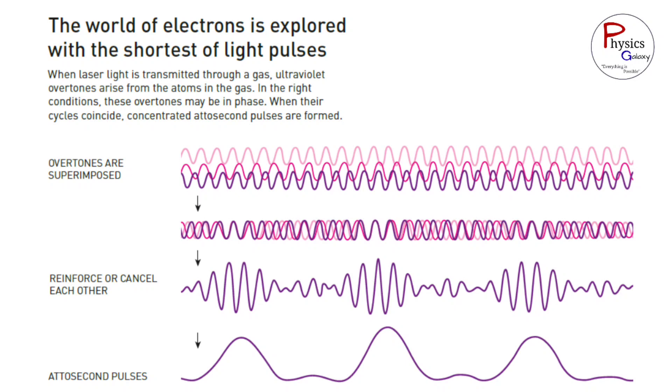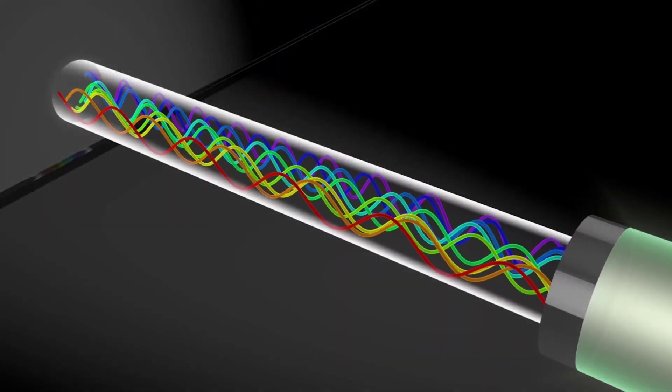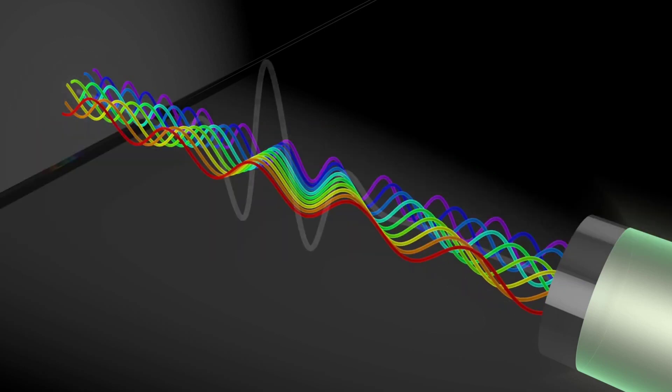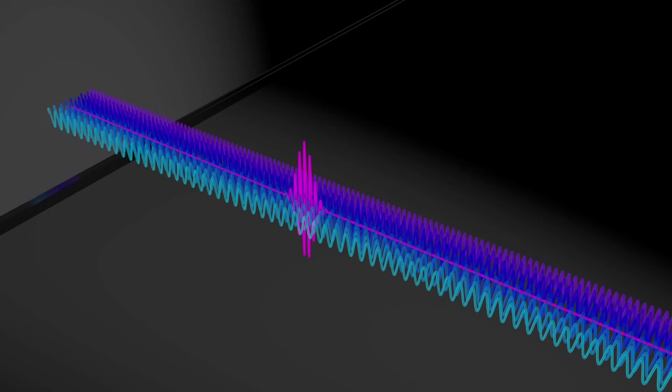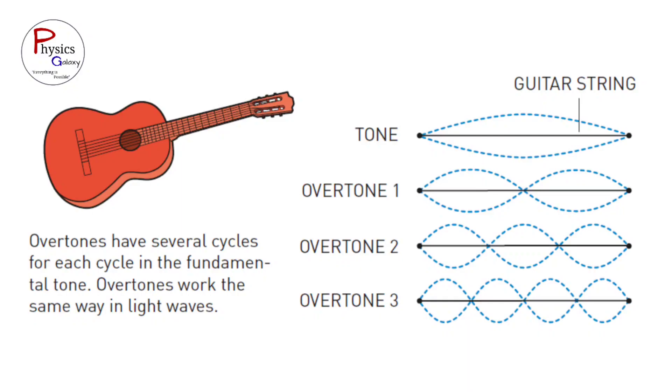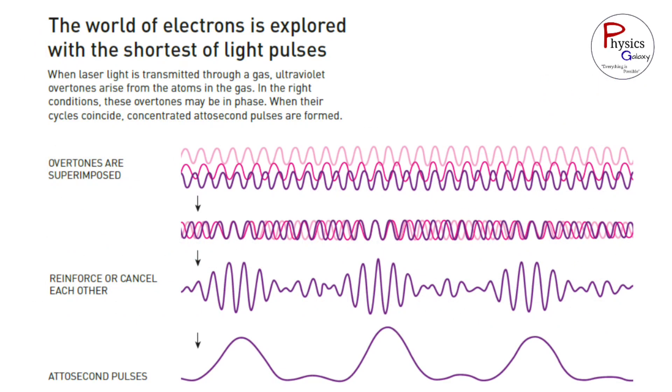Anne L. Hillier and her colleagues in 1987 were able to produce and demonstrate overtones using an infrared laser beam transmitted through a noble gas, contributing to the theoretical understanding of this phenomenon. The red guitar is a symbol of the musical analogy that the laureates used to explain their work. They compared the overtones of light to the overtones of a guitar string, which are higher frequencies that are produced when the string is plucked. The diagram shows how different overtones of light are created when a laser pulse interacts with atoms in a gas.